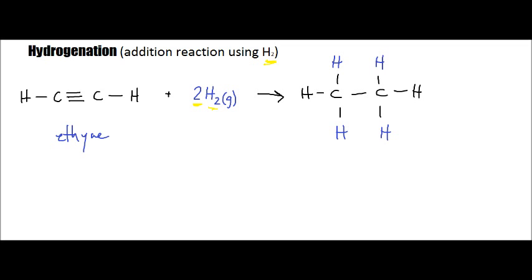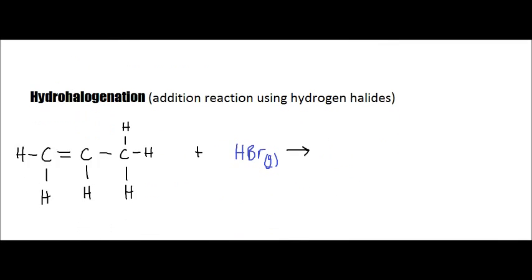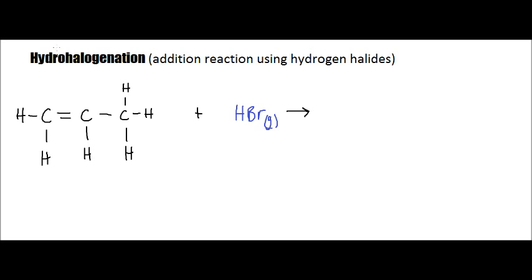The next type of alkene/alkyne reaction is what we call hydrohalogenation. It's also an addition reaction because we're going to be adding atoms to this hydrocarbon. However, the atoms that we're adding are going to be some type of hydrogen halide — hydrogen bonded with one of the halogens. Here in this example we have HBr gas — hydrogen bromide gas. This reaction will take place at room temperature.